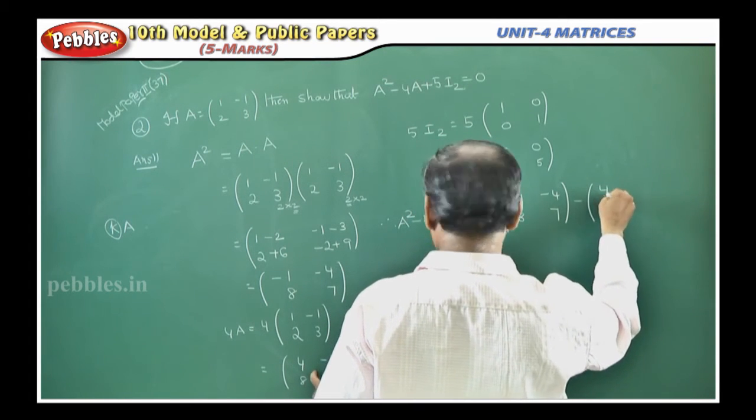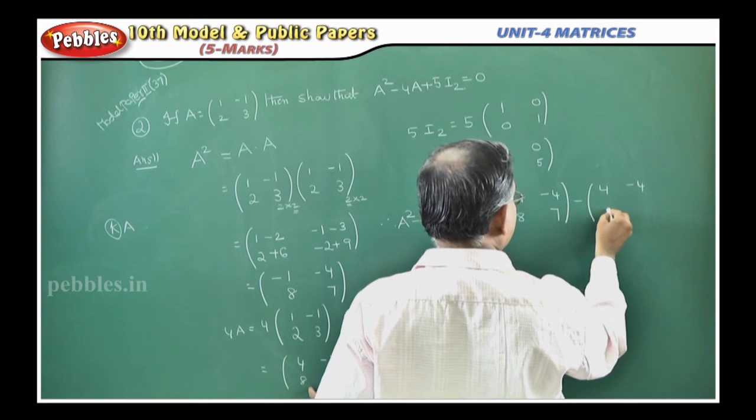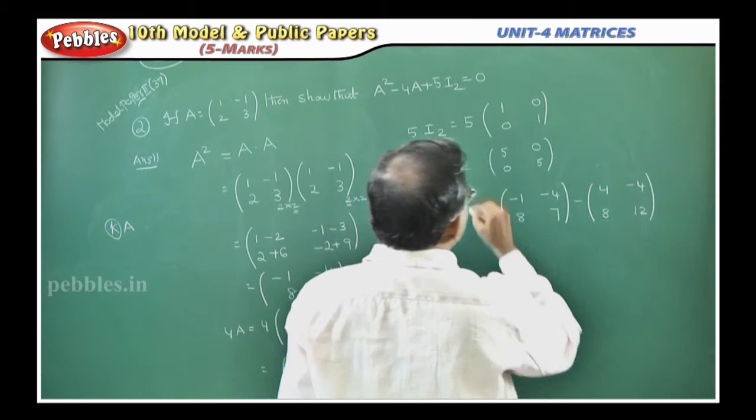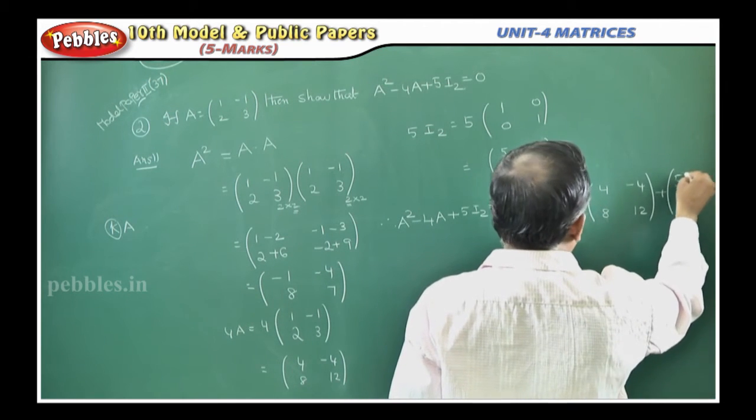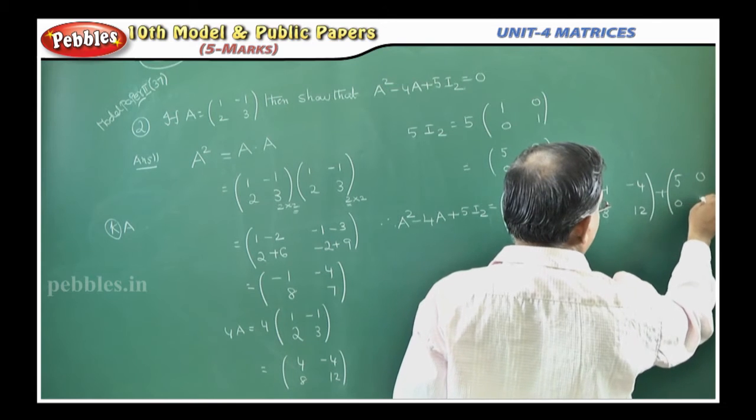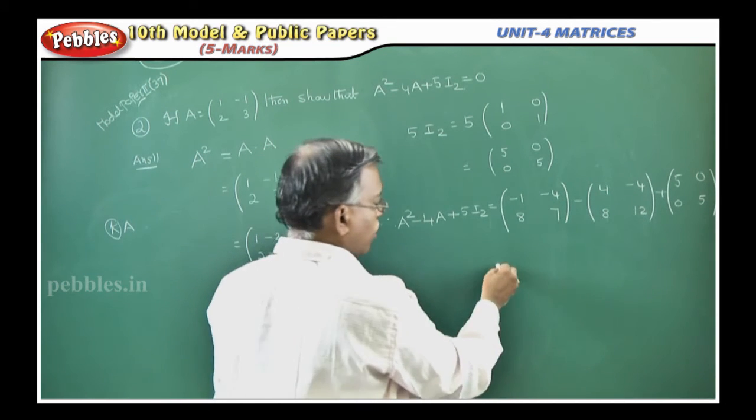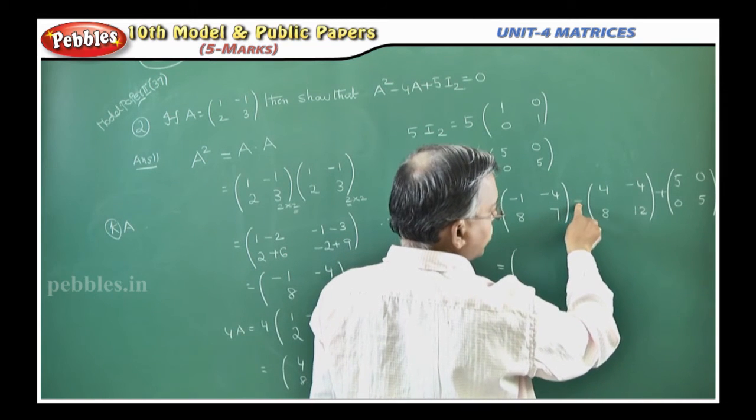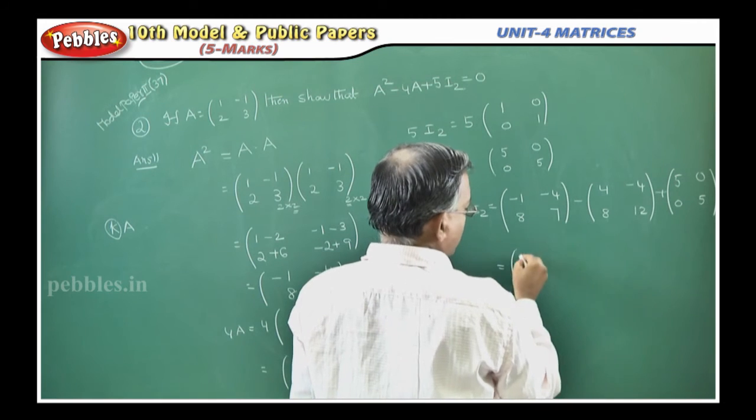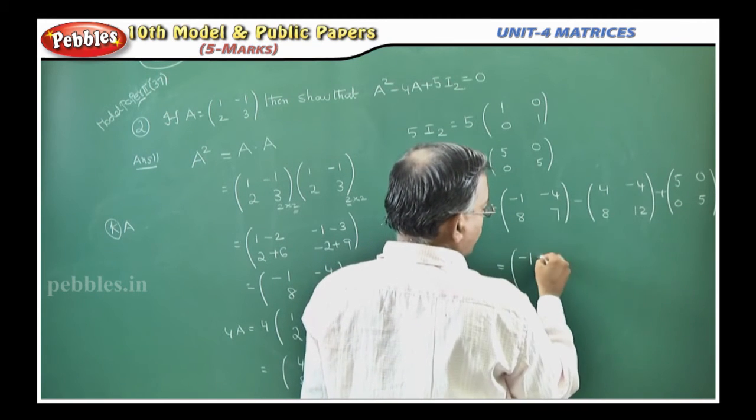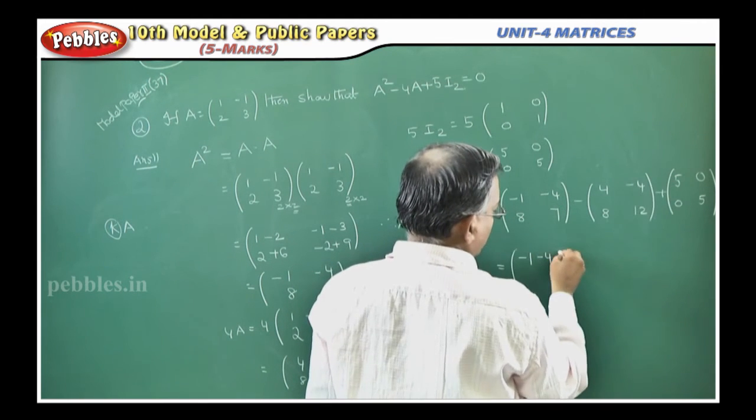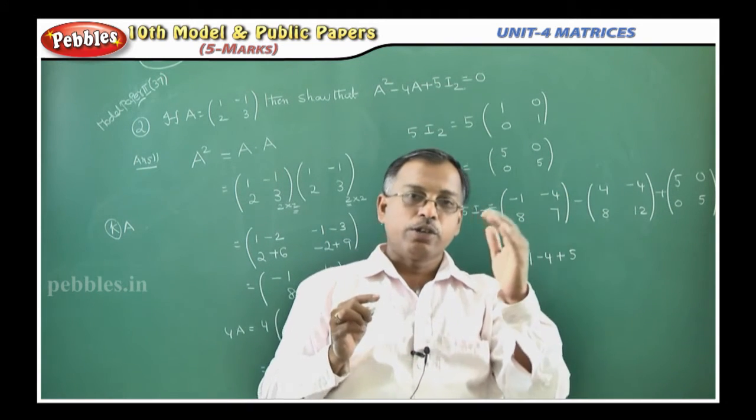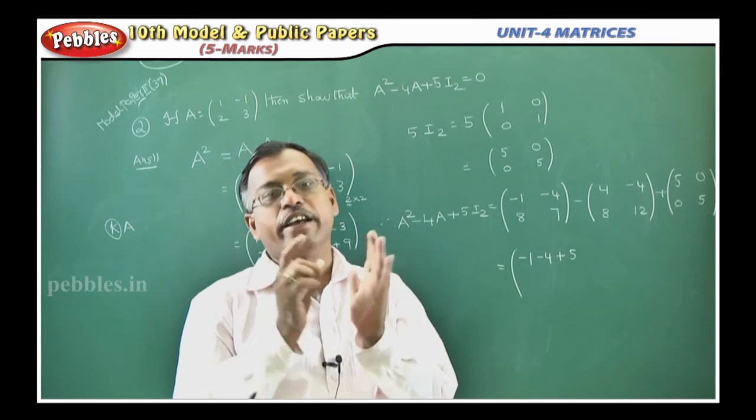You already got 4A matrix, just substitute. 4, minus 4, 8, 12. This is minus 4A plus 5I2. What is plus 5I2? 5, 0, 0, 5. This is the addition of three matrices. Here minus, you have to multiply inside, then you have to simplify. In addition, you have to add only the corresponding elements.